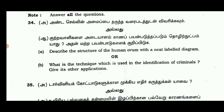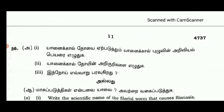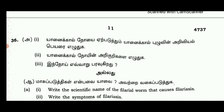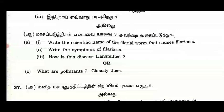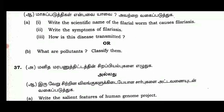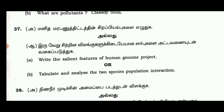What are the techniques used for the identification of criminals? Give other applications — this is a simple question about DNA fingerprinting. What are the main objections of Darwinism? List out the various causes of biodiversity loss. Write the scientific name. What are the pollutants? Classify them. Write the salient features of the Human Genome Project.